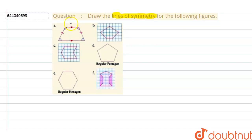Clearly we can say that this is going to be the line of symmetry for this figure, because along this line we are obtaining equal halves of this figure. Now for the next case, if we draw this line, then this figure is going to divide itself into two equal halves, so this is going to be the line of symmetry for this figure.